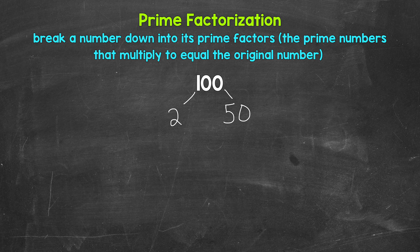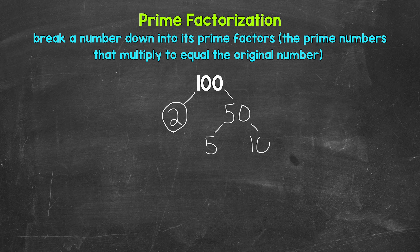Now let's continue to break this down. We have 2 and 50. Now 2 is a prime number, so we are done here — we can't break that down any further. So let's circle 2 to show that we have a prime number. Now 50, on the other hand, is a composite number. We can break 50 down further, so let's think of factors. 5 and 10 are factors of 50, so let's break 50 down into 5 and 10.